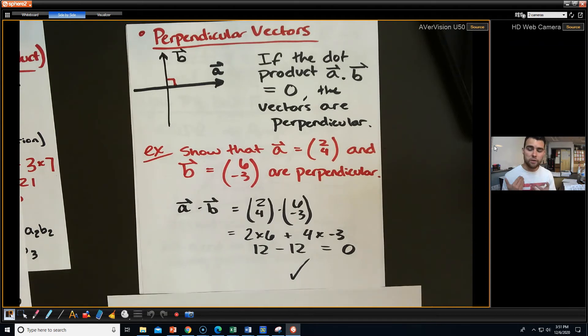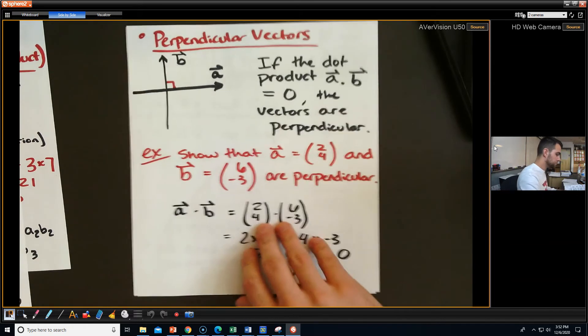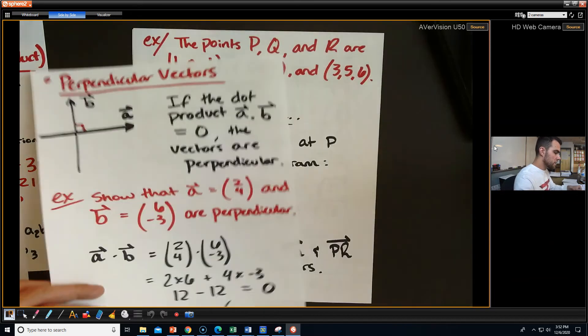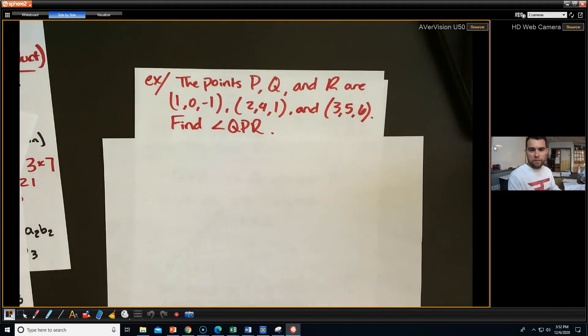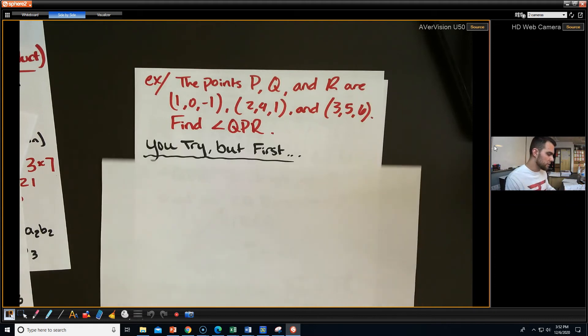Again, don't worry so much about why that works. I'm more just concerned with, can you use this formula to solve more complex problems? Here's a more complex problem. What if we have points P, Q, and R, and this is in 3D now, and we want to find the angle QPR? I'm going to have you guys try this one a little bit for sure, but I want to kind of guide you a little bit and give you some ideas of what to do with this.